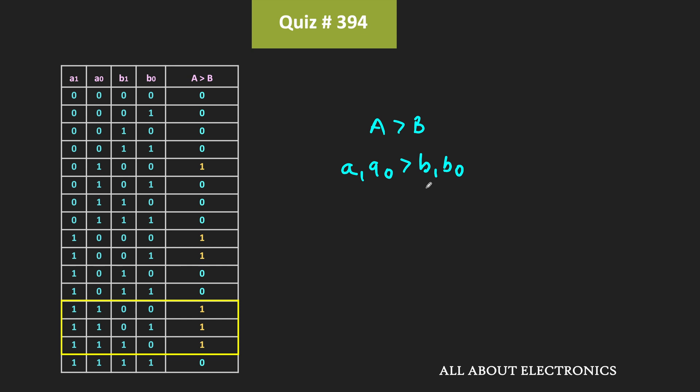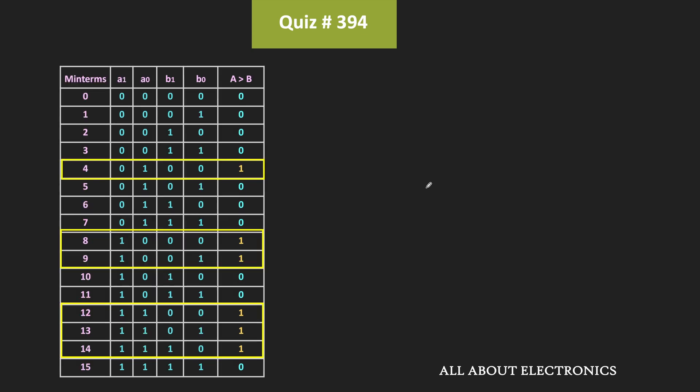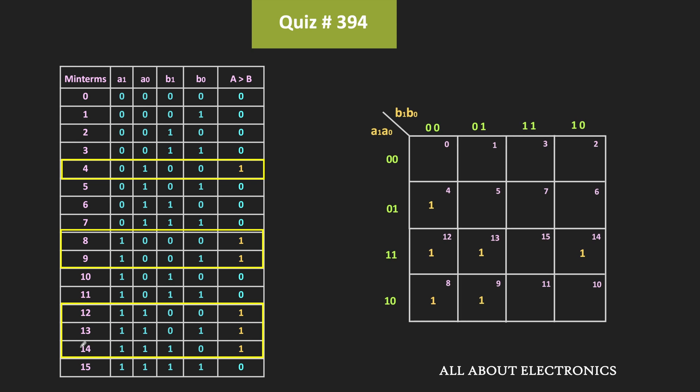Now, to find the minimized Boolean expression, let us represent this function in the form of a K-map. For that, first let us represent each combination with the corresponding minterm. As you can see, the output f is equal to 1 for the minterms 4, 8, 9, 12, 13, and 14. Now let us represent these six minterms with 1 in the K-map, and with the help of the K-map, let us try to find the minimal expression.